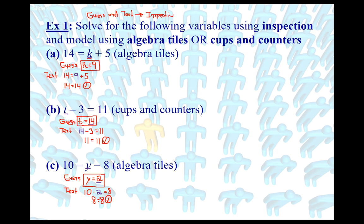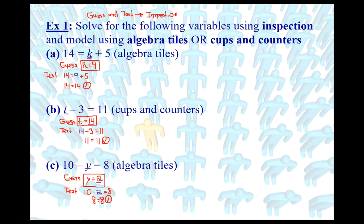Now we're going to do this with cups and counters and algebra tiles. I really don't want to, but they do serve a point because they illustrate the difference between a numerical coefficient and a constant. So let's represent this equation with algebra tiles. A positive constant with algebra tiles would be a red square, so we have to draw 14 of those.